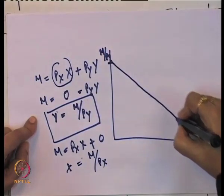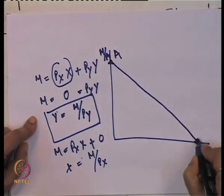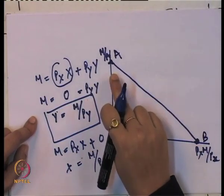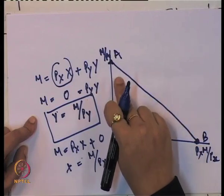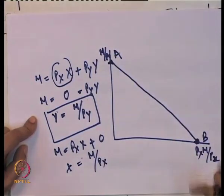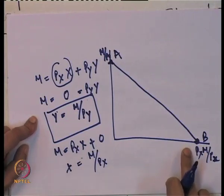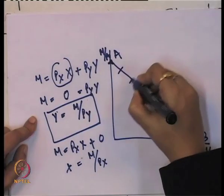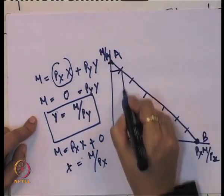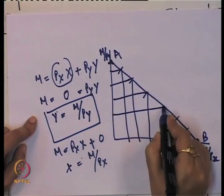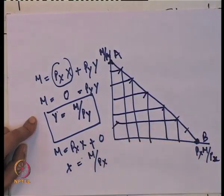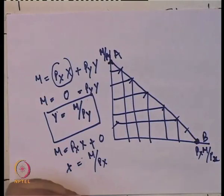If you join these two points A and B — at point A the entire money income is spent on Y, and at point B it is spent on X — then any point in between gives a mix of goods X and Y. So the indifference curve gives consumer preferences on goods and services, while the budget line gives the possible combinations of X and Y that can be consumed with the consumer's fixed money income.